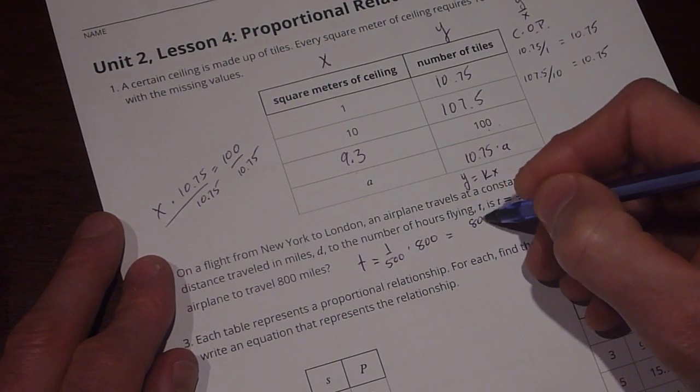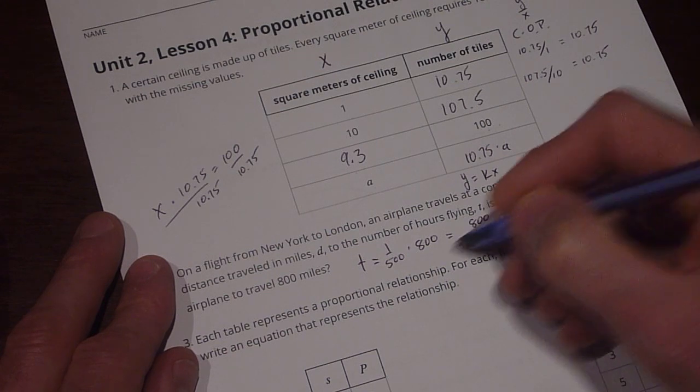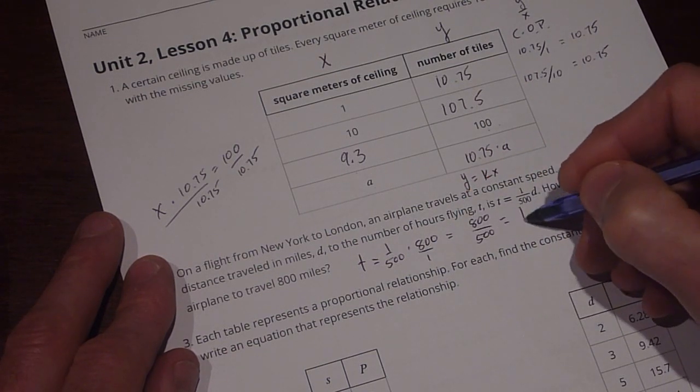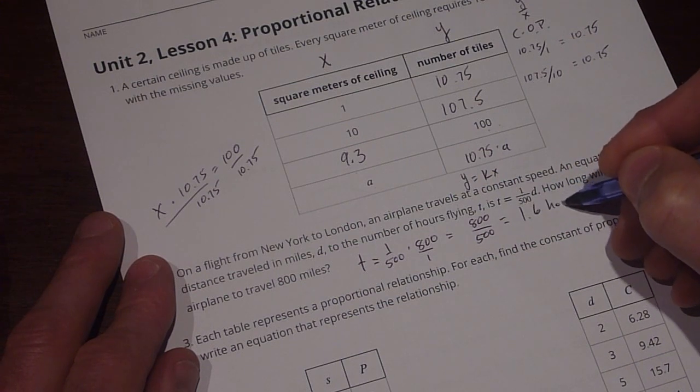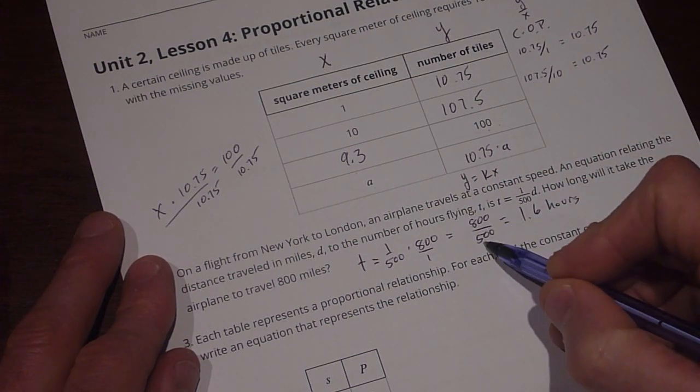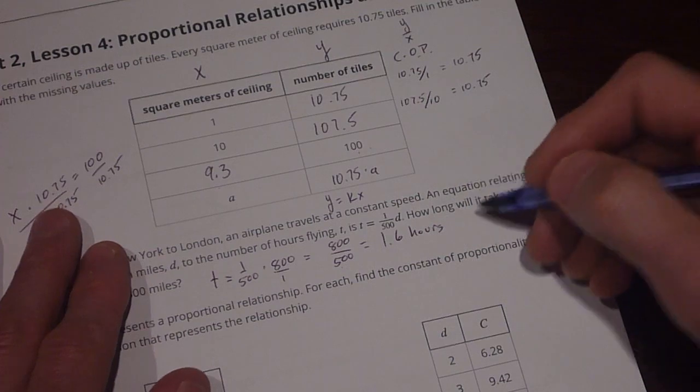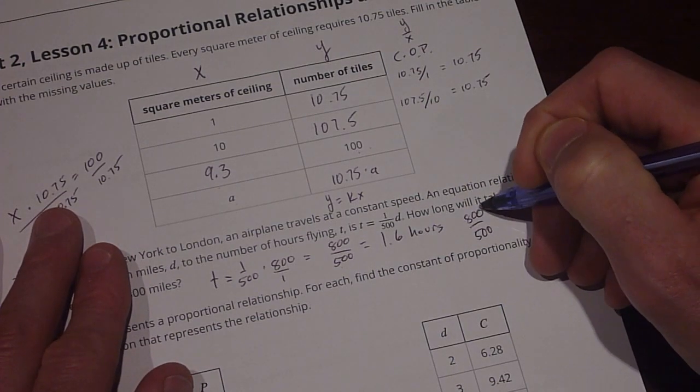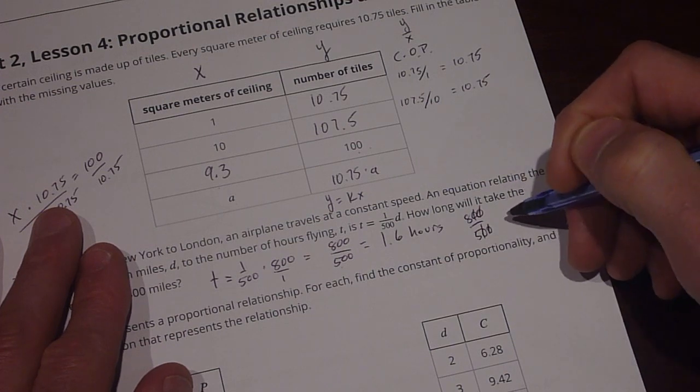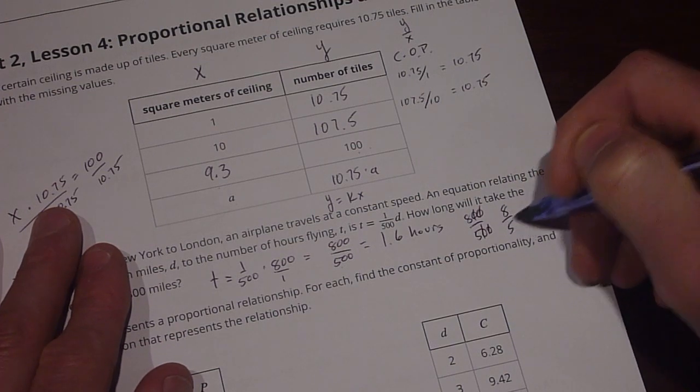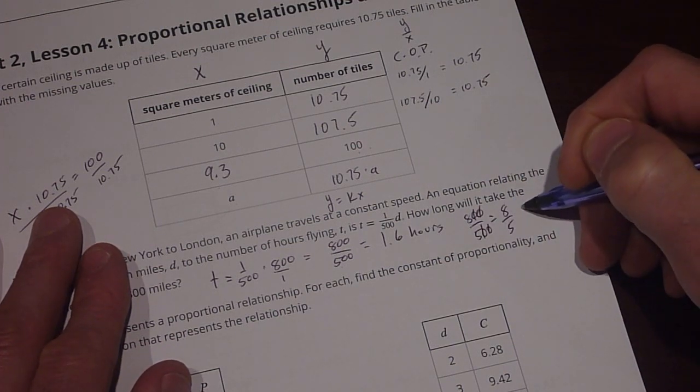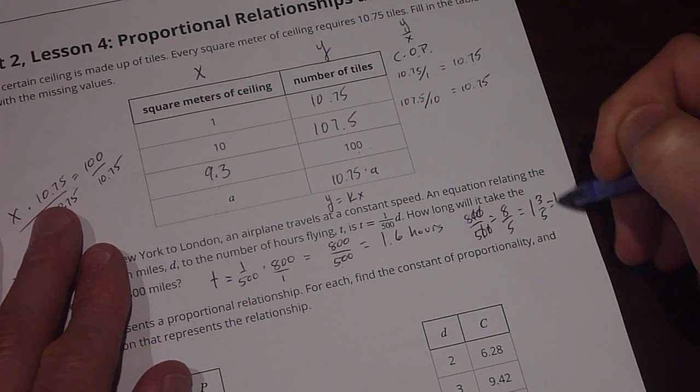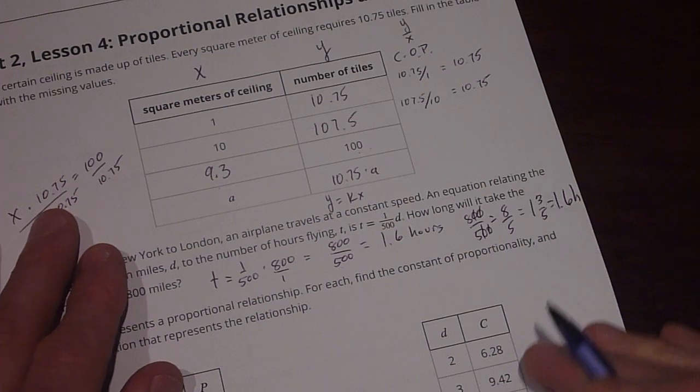And that equals 800 over 500, because this is over 1, and then that's going to wind up equaling 1.6 hours. A reminder, with this, we can take it and look over here and say that 800 over 500. Remember, the hundreds can cancel out, the zeros cancel out with mental math, so we're left with 8 over 5. So that's equal to each other, and that equals 1 and 3 fifths, or 1.6 hours.